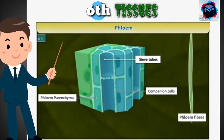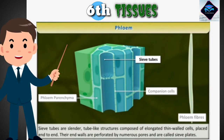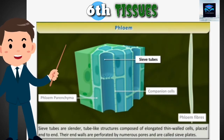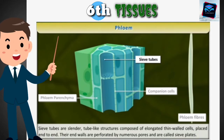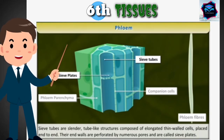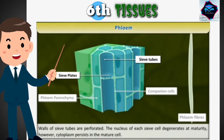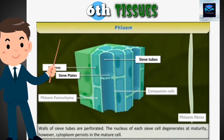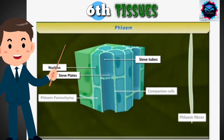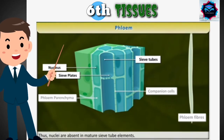Sieve tubes are slender tube-like structures composed of elongated thin-walled cells placed end to end, where the end walls are perforated by numerous pores and are called sieve plates. The walls of sieve tubes are perforated. The nucleus of each sieve cell degenerates at maturity; however, cytoplasm persists in the mature cell, so nuclei are absent in mature sieve tube elements.